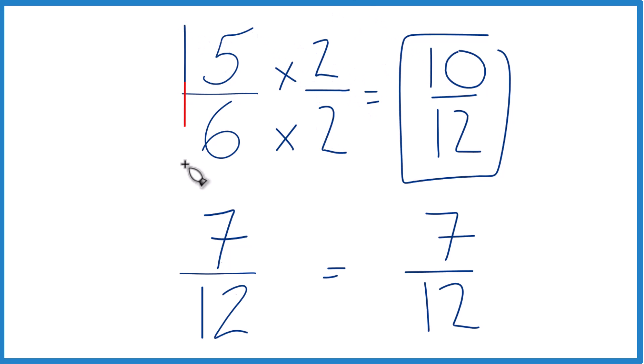So we could say that 5/6, that's greater than 7/12. And 10 minus 7 is 3. So it's 3/12 greater. Or 3/12, that also simplifies down to 1/4.